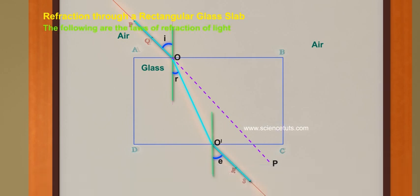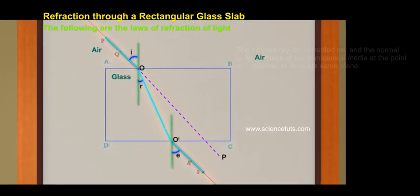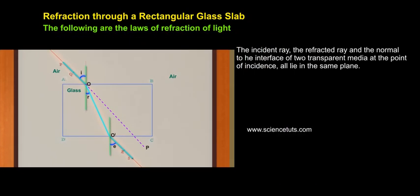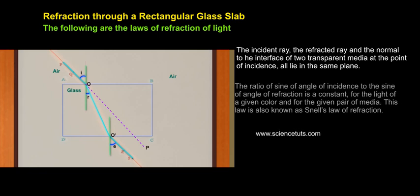The following are the laws of refraction of light. 1. The incident ray, the refracted ray, and the normal to the interface of two transparent media at the point of incidence all lie in the same plane. 2.